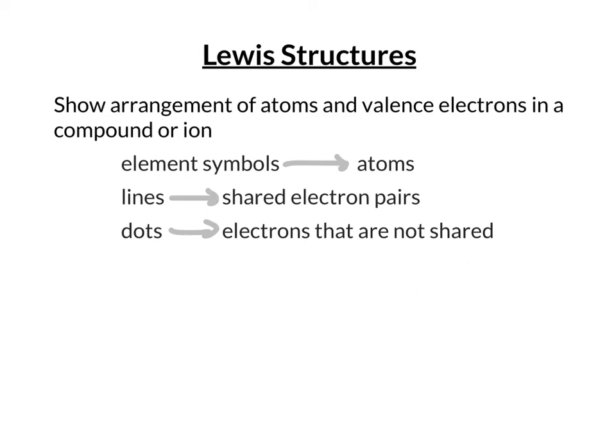One important thing to note is that Lewis structures are not a 3D representation of a molecule. We're drawing it flat on a piece of paper, and not all molecules are flat. Even if they are flat and two-dimensional structures, we don't always draw them with accurate bond angles. We might draw something with a 180-degree angle when really its angle is 120 degrees.